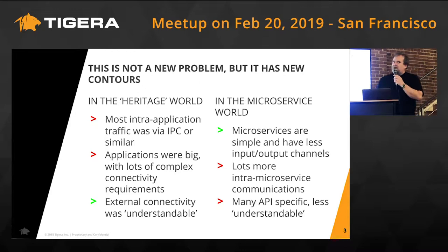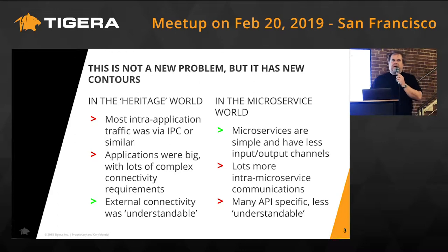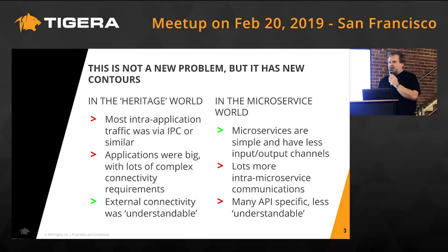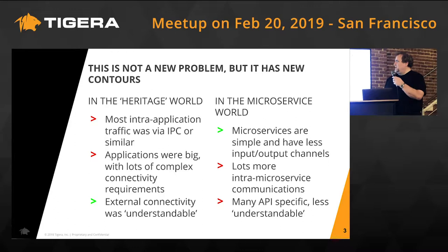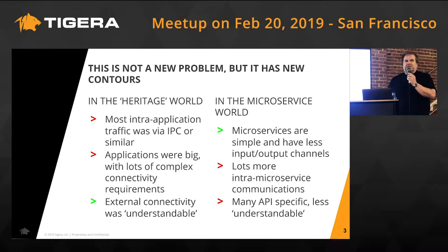In the heritage world, a lot of your communications were opaque, or at least much more difficult to surface, because most of them happened within the bounds of a compiled application - library calls, inter-process communication - very much opaque within the bounds of the application. So surfacing what was being communicated was somewhat more difficult. Applications were big and complex with lots of cognitive requirements that had grown over potentially decades, so actually knowing everything that a given compiled binary needs becomes an interesting exercise.